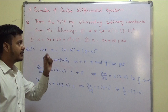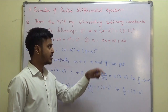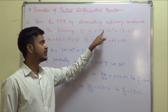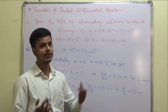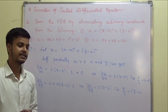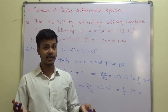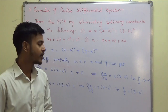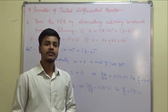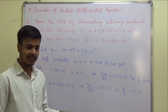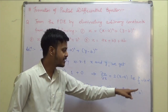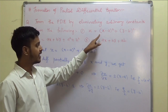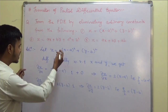Now we have to form the partial differential equation by removing the arbitrary constants. These constants a and b are attached with x and y respectively. We can substitute (x minus a) as p/2 and (y minus b) as q/2 back into the original equation to get the partial differential equation.